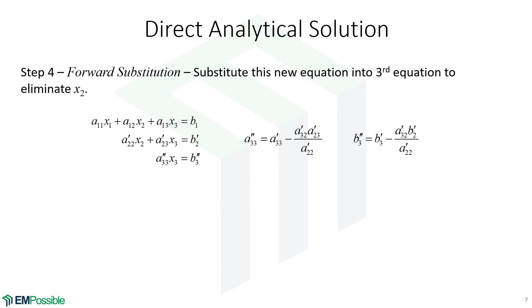So we do that forward substitution and we have now a new equation in the third row. That's what the double apostrophe is. So we have a new A33 and a new B3. And the way we calculate those is from the values from the previous step. That's the single apostrophe.